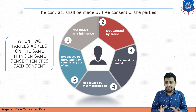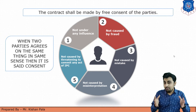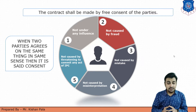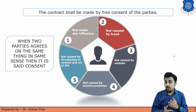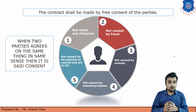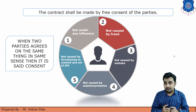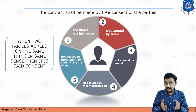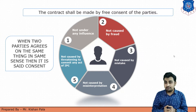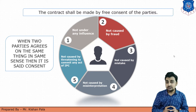The second aspect is that consent must not be caused by fraud. If any party enters a contract through fraud, that is illegal. The third aspect is that it must not be caused by mistake. For example, if you are a contractor and the owner specifies self-compacting concrete, but by mistake you fill the tender with normal compacting concrete — which is cheaper than self-compacting concrete — that mistake is not allowed in the contract.